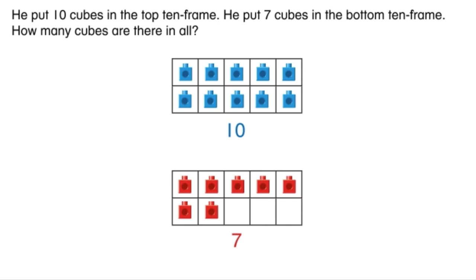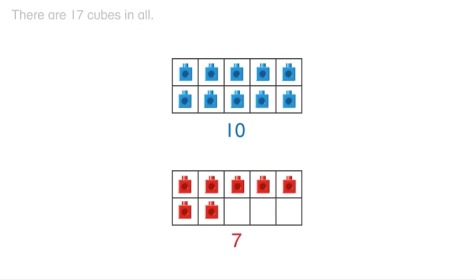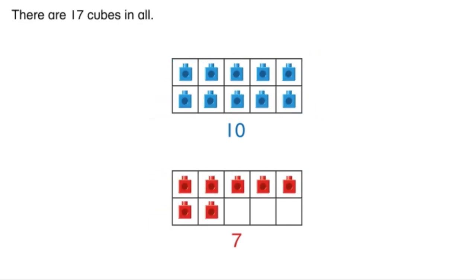Do you remember how many cubes there were when we had our great big tower? You're right. There were 17. There are 17 cubes in all. Does this equation match the cubes? Let's read the equation together. Ready? 17 equals 10 plus 7.